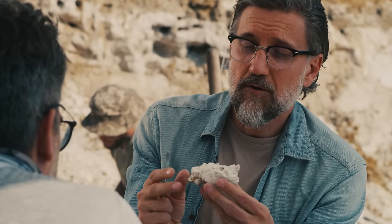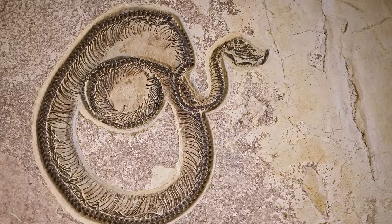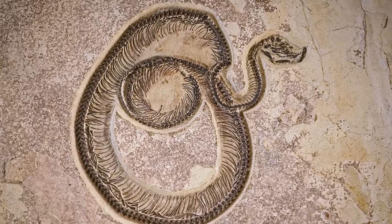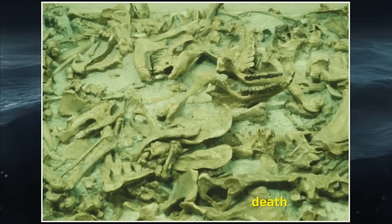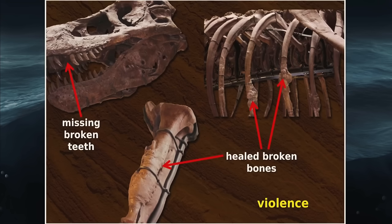What do we find in the fossil record? It is a record of death — you see dead things, not living things crawling around in the rocks. We see evidence of carnivory, cancer, broken teeth, and healed fractures, so there was violence. Adam and Eve couldn't have been walking on a fossil graveyard in the Garden of Eden, because that would be a record of death and destruction before they arrived — but that's what the secularists say.